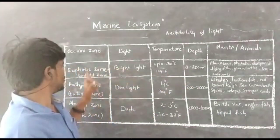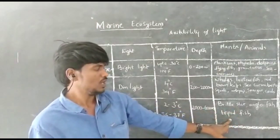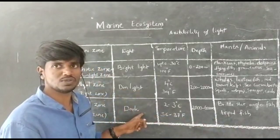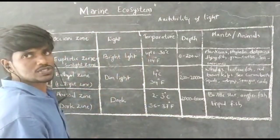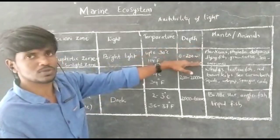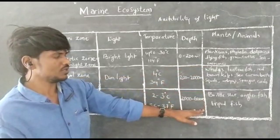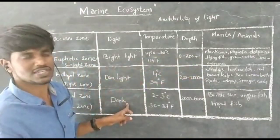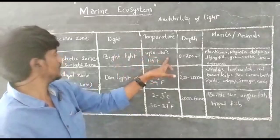The zone beneath the euphotic zone is the bathyal zone, and the final zone is the abyssal zone — it is dark and the temperature is very less there. Photosynthesis takes place at a maximum rate in the euphotic zone. Very less photosynthesis takes place in the bathyal zone, and no photosynthesis takes place in the abyssal zone. About 80% of the flora and fauna is seen in the euphotic zone.